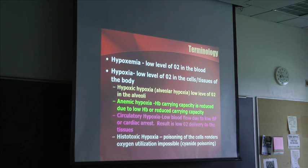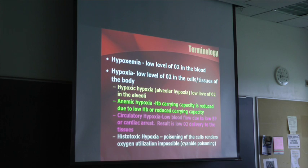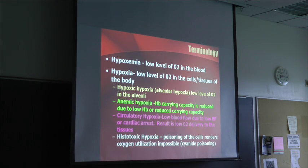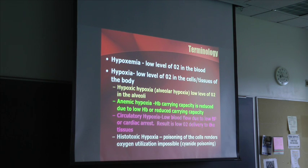Why isn't it histotoxic? Histotoxic hypoxia is the problem with the cells utilizing oxygen. With carbon monoxide poisoning, the cells can utilize oxygen — but the hemoglobin can't carry the oxygen. So carbon monoxide doesn't poison the cells; it poisons the hemoglobin.